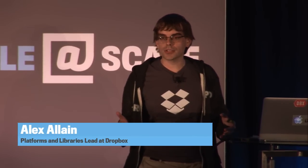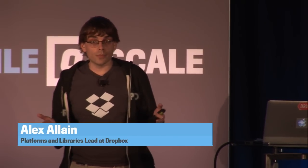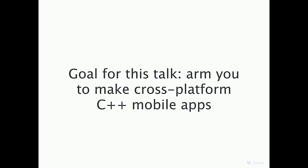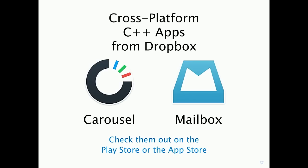The goal for this talk is to arm you guys to go out and start making cross-platform C++ apps. We'll show you some code, talk about one of the tools we've built, and hopefully give you some insight into how to do things more efficiently. At Dropbox, we have two apps written cross-platform using C++: Carousel, a Dropbox-connected photo gallery that can scale to tens of thousands of photos with native performance and look and feel, and Mailbox, a rethinking of how people use email. Both are available on iOS and Android, sharing the same C++ core.